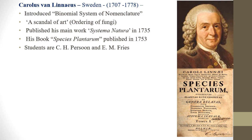Carolus von Linnaeus introduced the binomial system of nomenclature, where every organism has two names — genus and species. He published his greatest works, 'Systema Naturae' and 'Species Plantarum' (released in 1753), detailing plant species naming and binomial systems. His students C.H. Persoon and E.M. Fries later became great contributors to plant pathology.